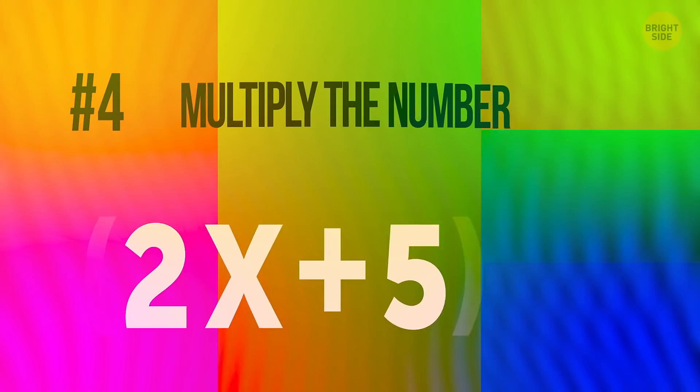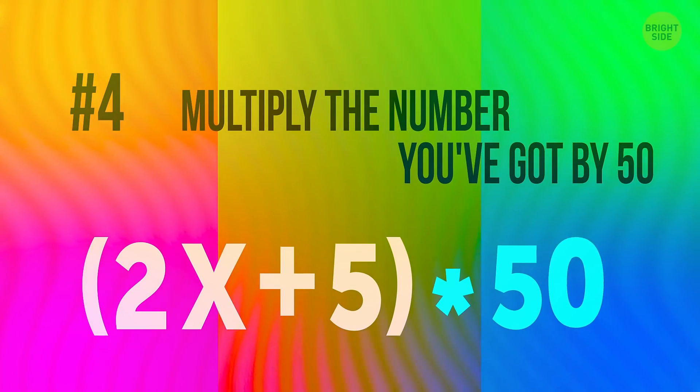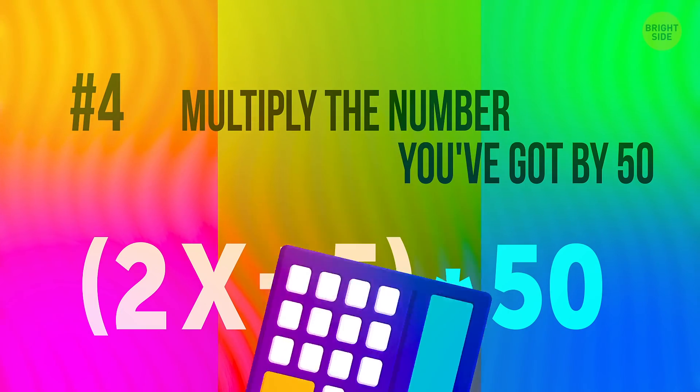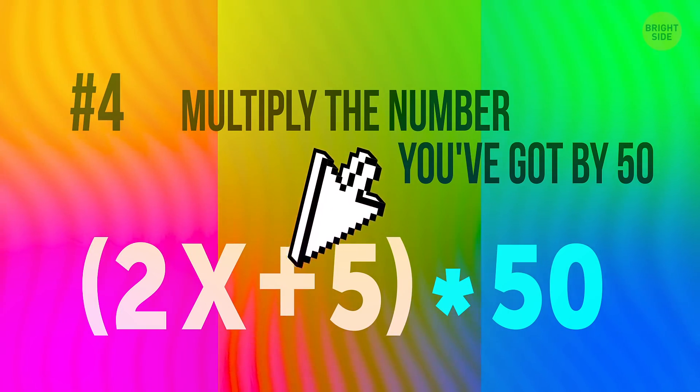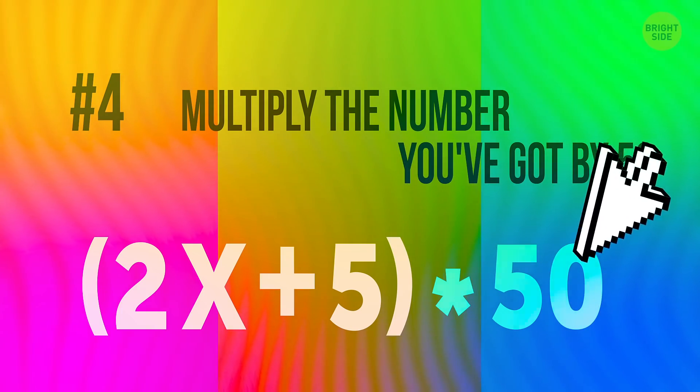Number 4. Multiply the number you've got by 50. Uh-oh, it's getting tough. Time to make use of that calculator. So, you have X multiplied by 2 plus 5 multiplied by 50.